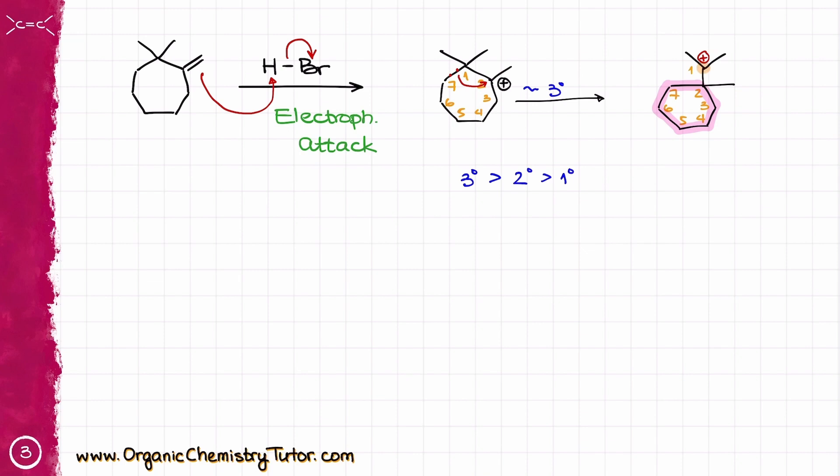This is still a tertiary carbocation, which from the carbocation stability is as stable as what we had before, but now due to this alkyl shift, we have shrunk our ring, we have done the ring contraction, and now actually we have a more stable ring overall, which means that I've made a more stable carbocation. And if I could make a more stable carbocation, it means that I had a driving force for this reaction.